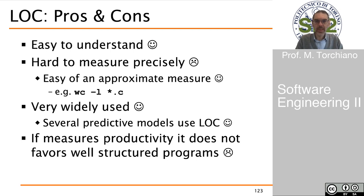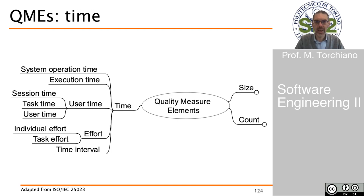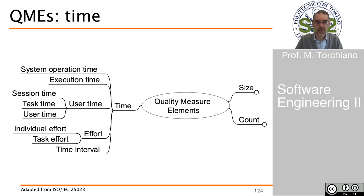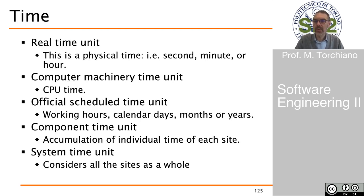When we talk about time, we again have several types that we want to measure. System operation or execution time are quite different, and they are different from user time — the time taken by the user to perform some activity. We can also have effort, the time used by people to perform some tasks, or a time interval. When dealing with time, we can have several different types: real-time units — physical time, wall clock time — and time units based on the computing unit, so CPU time.